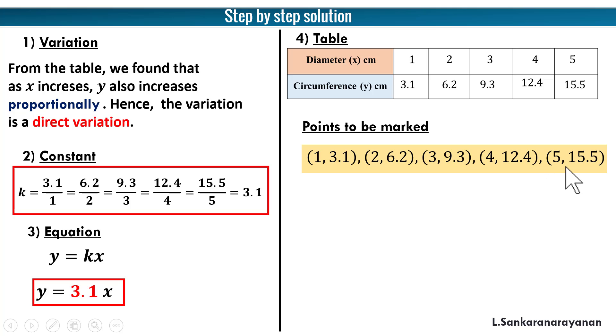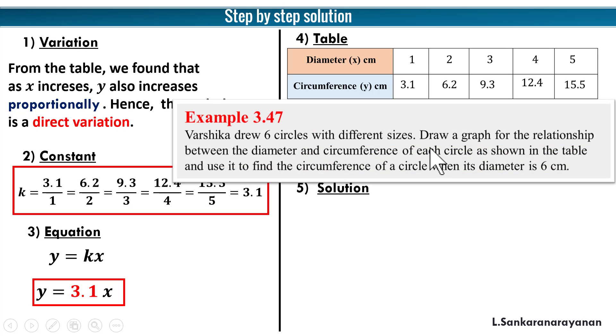Points to be marked: 1 comma 3.1, 2 comma 6.2, 3 comma 9.3, 4 comma 12.4, 5 comma 15.5. And the last step is solution. For that we need the question. Let us see the question: draw the graph of the relationship and use it to find the circumference of the circle when its diameter is 6 centimeter. So from the graph, when the diameter is 6 centimeter, the circumference of the circle is - you put a dash for that.